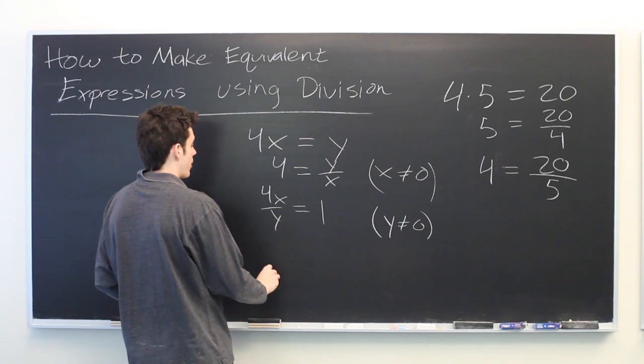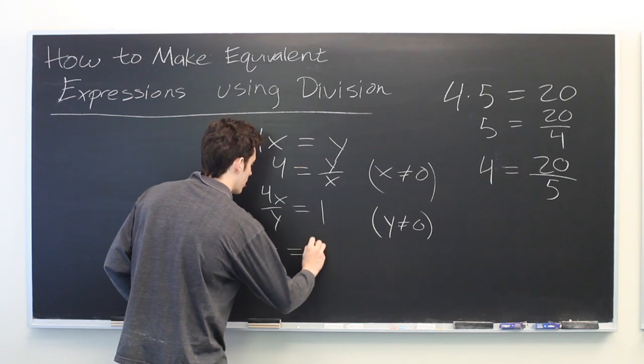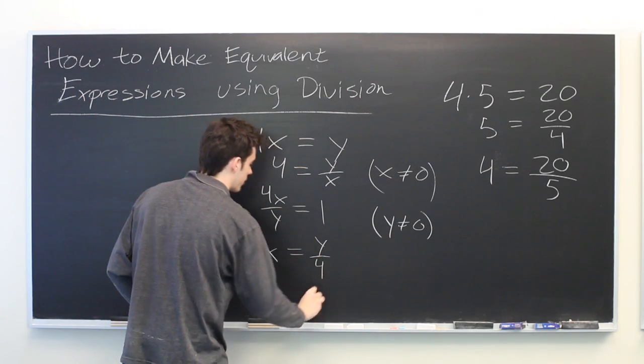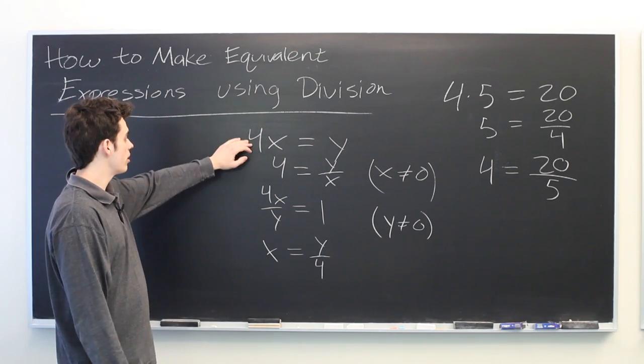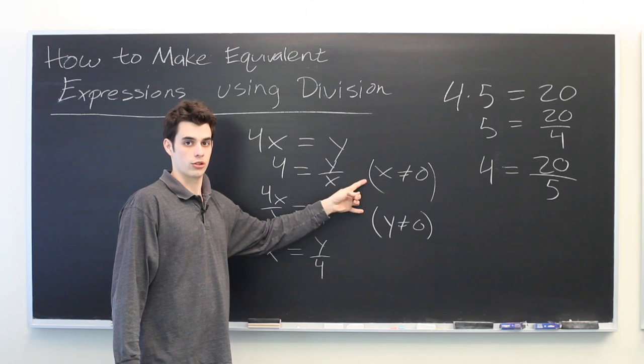Or we can divide both sides by 4 and we get x equals y over 4. All of these expressions are true if our original expression is true and we observe these conditions.